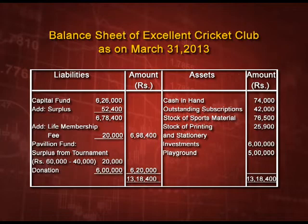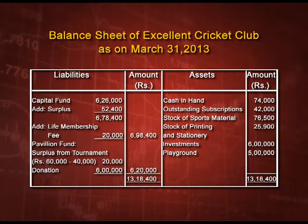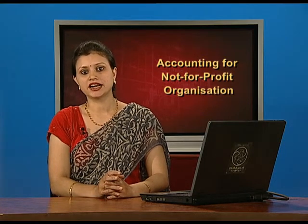On the asset side: cash in hand rupees 74000 (closing cash from the receipt and payment account); outstanding subscription rupees 42000 (from additional information); stock of sports material rupees 76500 (closing stock calculated in the income and expenditure account); stock of printing and stationery rupees 25900 (closing stock); investment rupees 60000; playground rupees 50000. Adding both the liability and asset sides, the balance is equal at rupees 1318400.